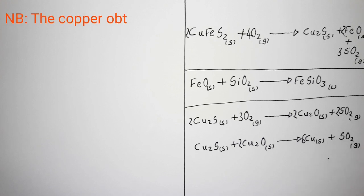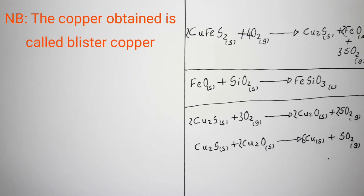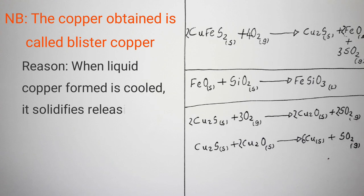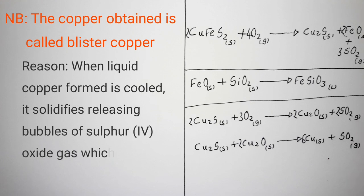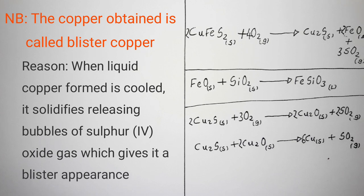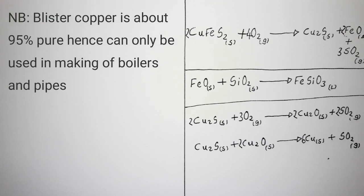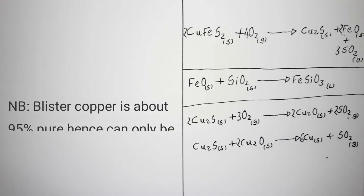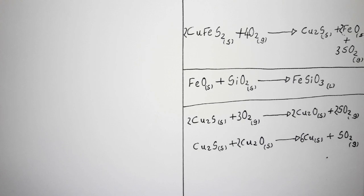The copper obtained at this stage is called blister copper. When the liquid copper formed is allowed to cool and solidify, it releases bubbles of sulfur dioxide gas, giving it a blister appearance — hence the name. Note that blister copper is about 97% pure, so it can only be used to make boilers and pipes. It cannot be used in making electrical cables. Since it is impure, purification is done by electrolysis — this is the fourth and final process.